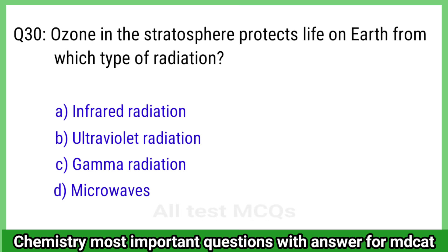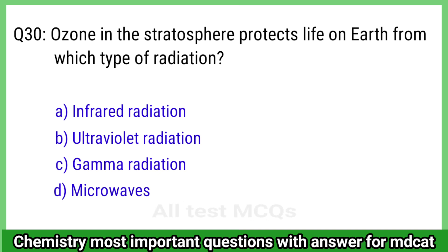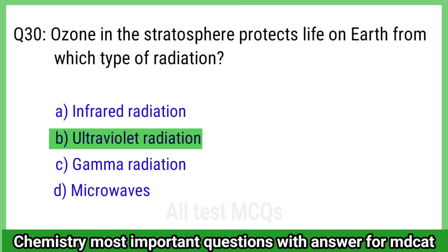Question 30: Ozone in the atmosphere protects life on Earth from which type of radiation? The right answer is option B, ultraviolet radiation.